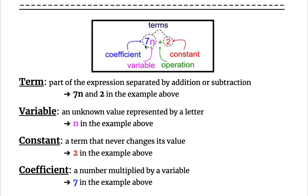Term is a part of the expression and that's the ones that are in the dotted lines being circled. That's a part of the expression that's separated by addition or subtraction. In this algebraic expression, the two terms are being separated by an addition operation. So the two terms are 7n and 2. The two terms in this entire algebraic expression.